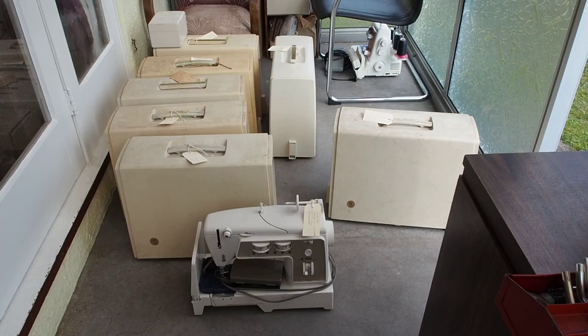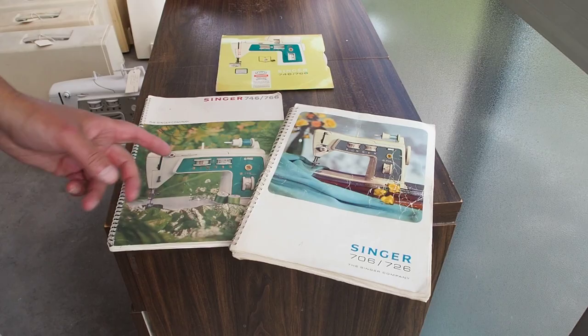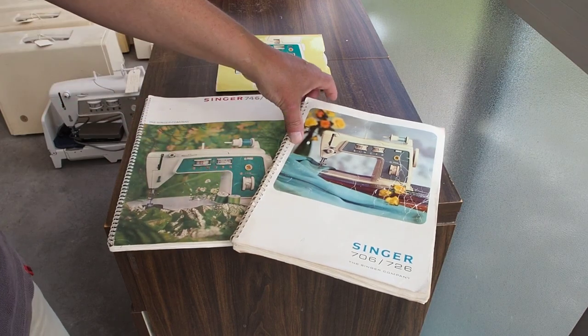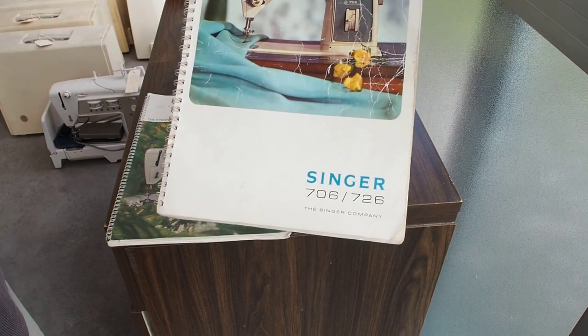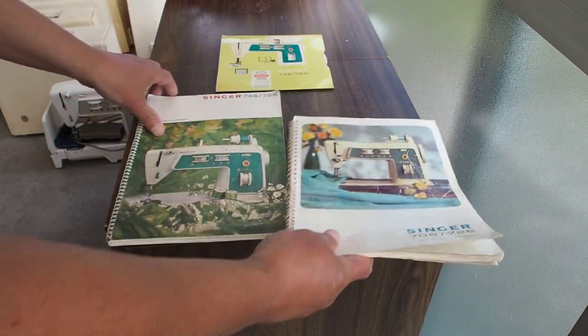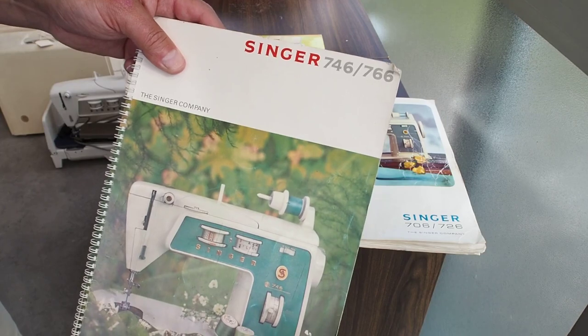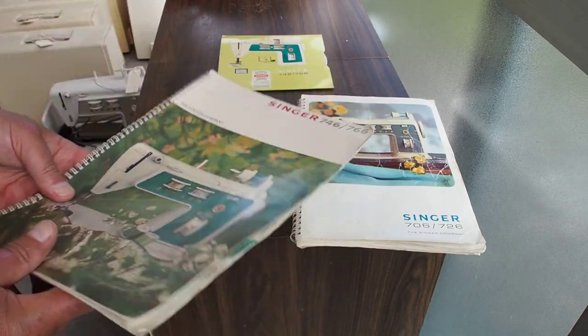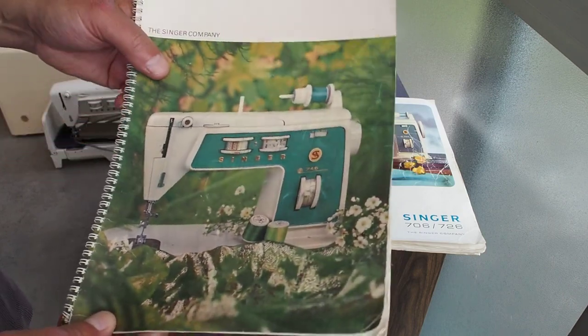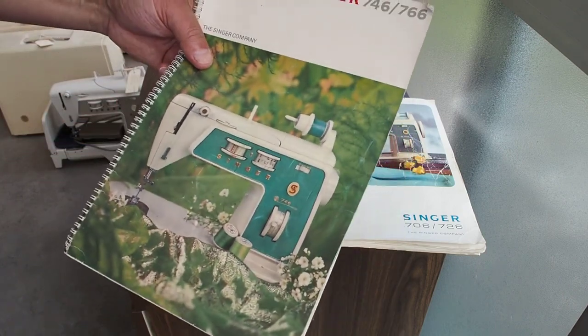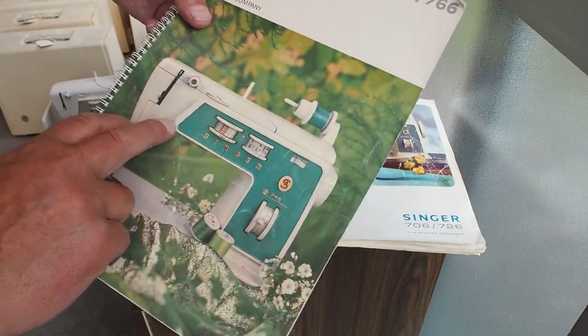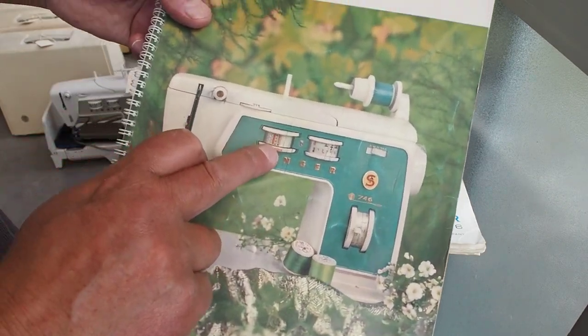I'm just going to go through some of the machines and do a little assessment. Out of all those machines, I've actually only got two manuals - two original manuals. I've got one for the 706/726 and one for the 746/766. I don't have one for the 760, but part of today's video is to take a look at what the different features are for the different models.